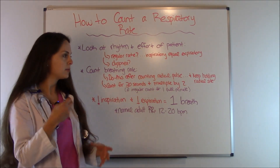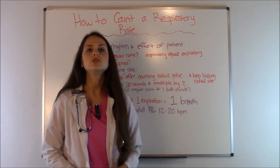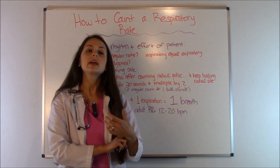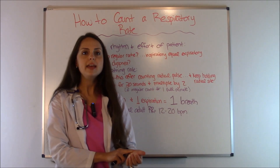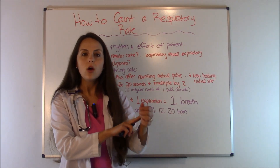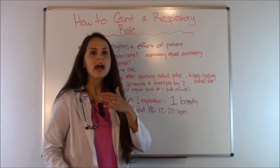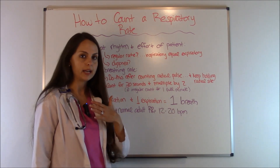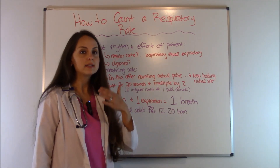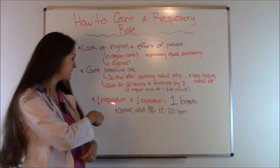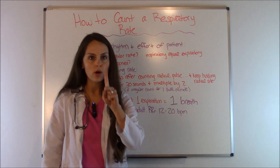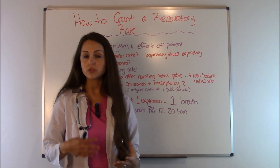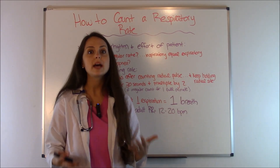To do this, typically when you go in to do your vital signs, you'll count a radial pulse by feeling on the radial artery, and you'll count that for 30 seconds if it's regular. Then while you're still holding the radial pulse site, you're going to look at the chest of the patient and watch how the chest is rising and falling. You count the rising and falling as one breath, because one inspiration and one expiration equals one breath. Do that for 30 seconds, then multiply by two — that is your respiratory rate.